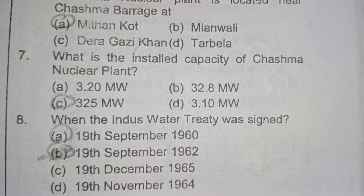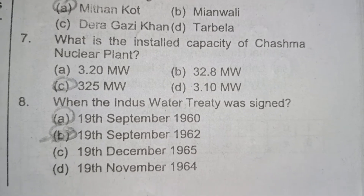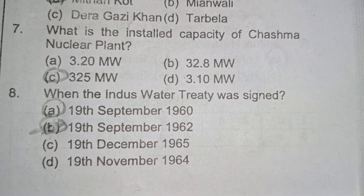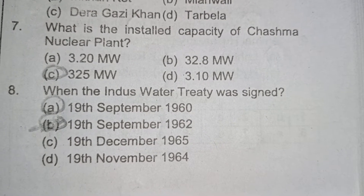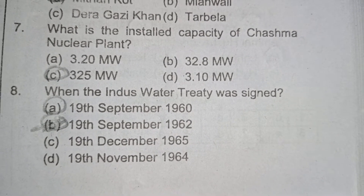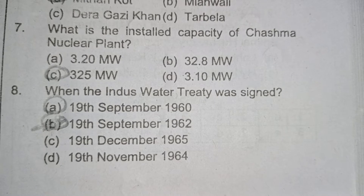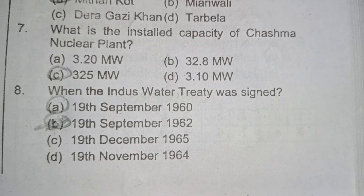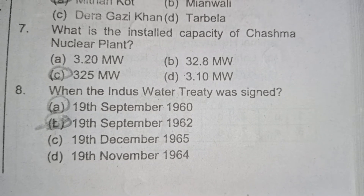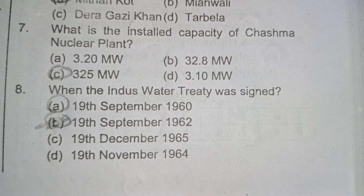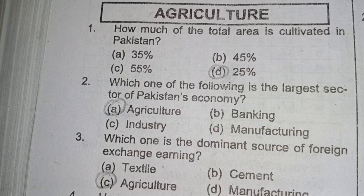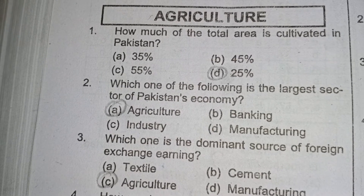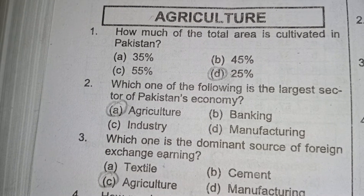325 MW is the right answer. Eighth question: when was the Indus Water Treaty signed? Option E is correct: 19th September 1960. Next topic: agriculture.